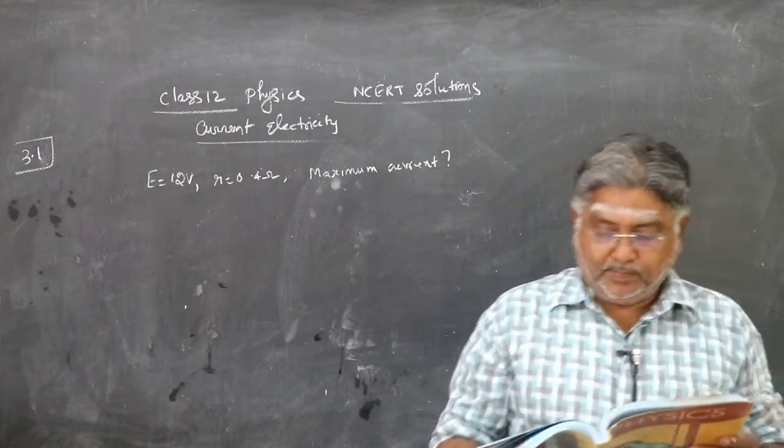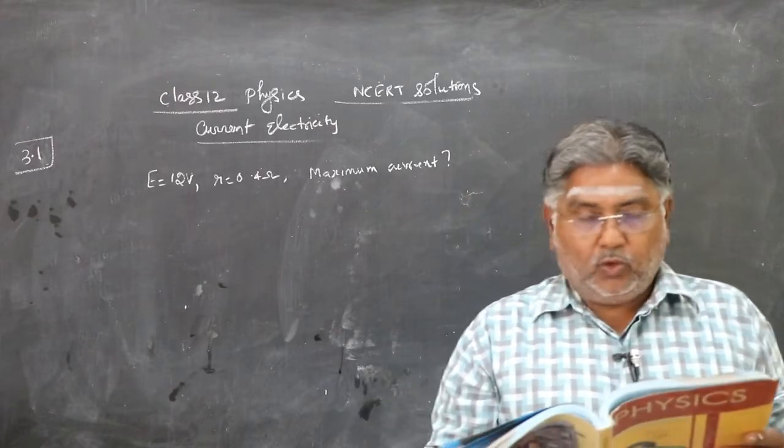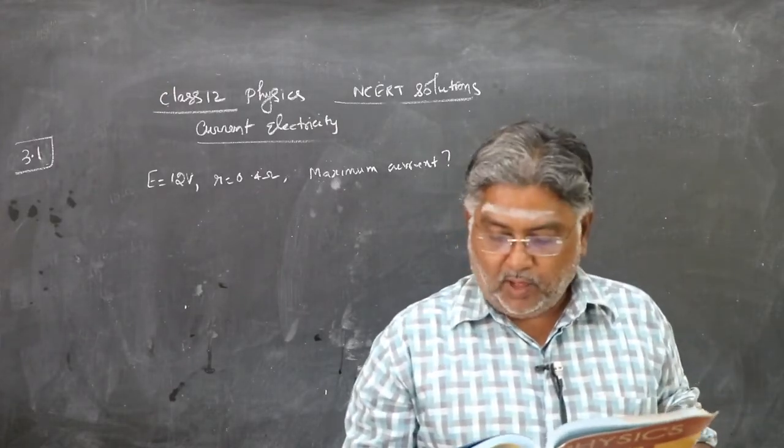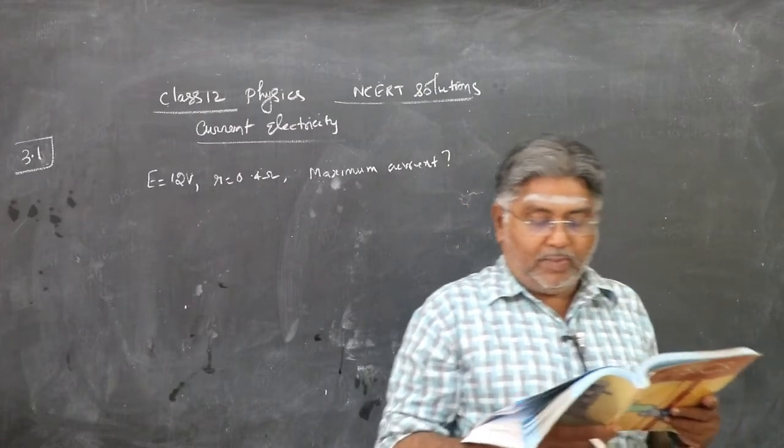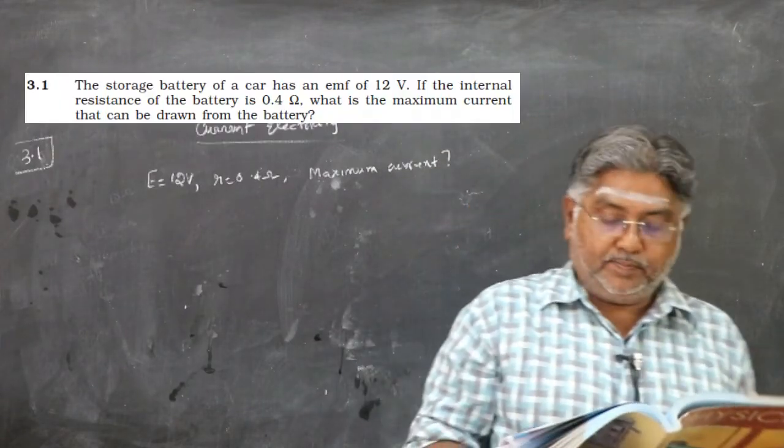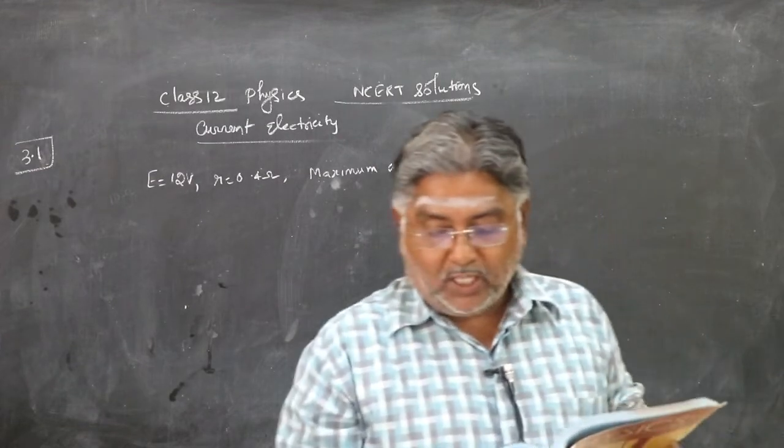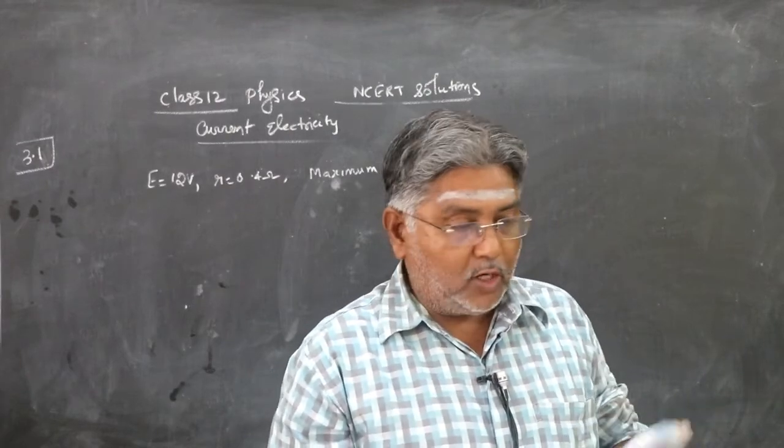Exercise 3.1. The storage battery of a car has an EMF of 12V. If the internal resistance of the battery is 0.4 ohm, what is the maximum current that can be drawn from the battery?